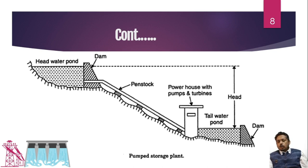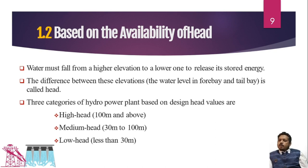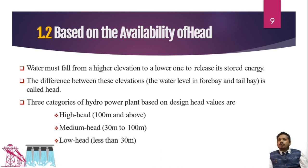The second category of analysis is based on availability of head. Head means the slope distance between our reservoir and the turbine — the distance between these two points is called the head. We have three types of power plants based on head: high head, where the distance is more than 100 meters; medium head, with 30 to 100 meters; and low head, with less than 30 meters. The force of the water at the turbine is defined by this head.